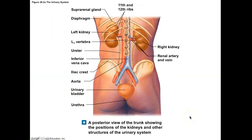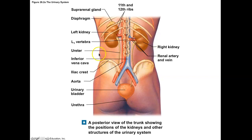Let's take a look at the position of the kidney. The right kidney is lower than the left. A lot of people are surprised — if asked to point to their kidneys, they usually point right above their hips, but the kidneys are actually a little bit higher than that, partially covered by the last two inferior ribs.